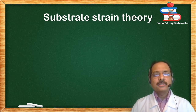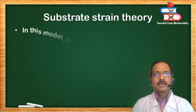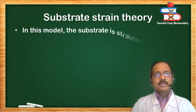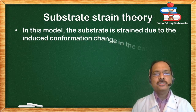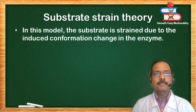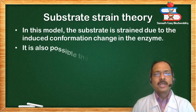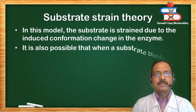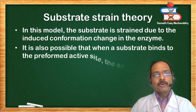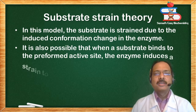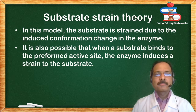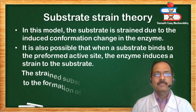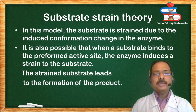Substrate strain theory: in this model, the substrate is strained due to the induced conformational change in the enzyme. It is also possible that when a substrate binds to the pre-formed active site, the enzyme induces a strain to the substrate. The strained substrate leads to the formation of the product.